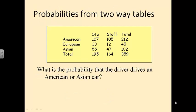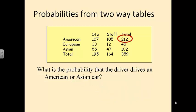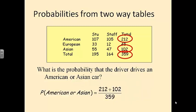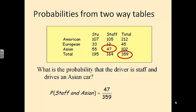What's the probability that the driver drives an American or an Asian car? Is that disjoint? Yes — it is disjoint because they can't happen at the same time. So we take all American and Asian cars — 212 plus 102 — and divide by 359 for the total. What's the probability that the driver is staff and drives an Asian car? There are 47 people who are staff and drive an Asian car, so we have that probability.